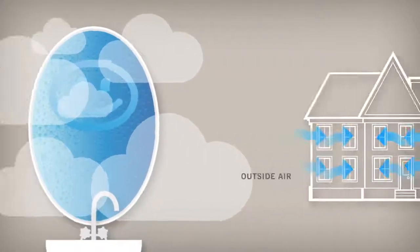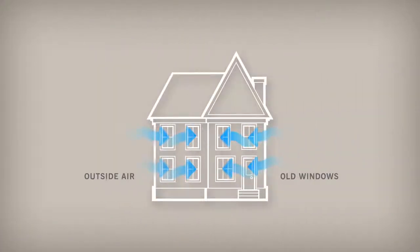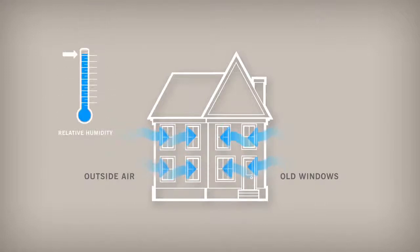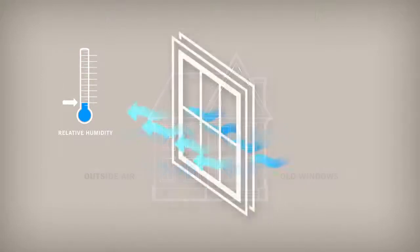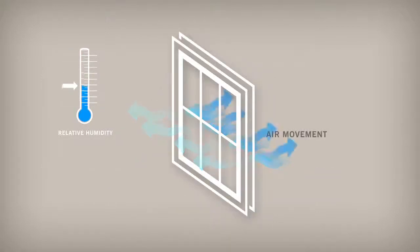If you hadn't noticed condensation before, it may be because your old windows were letting outside air into your home. When outside air leaks into your home through drafty windows, the relative humidity inside is lowered and condensation is less likely to form.